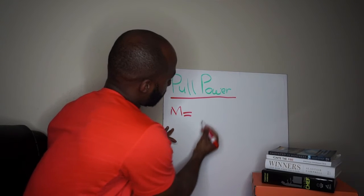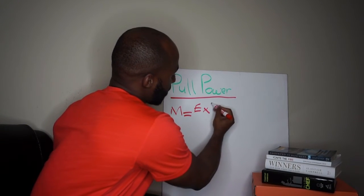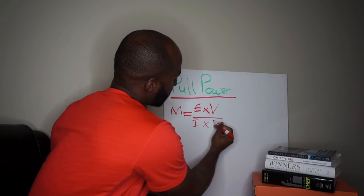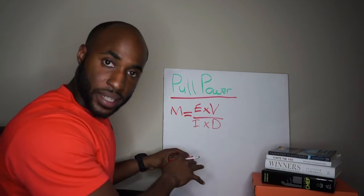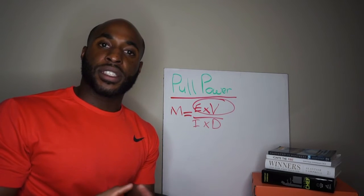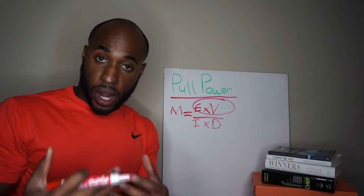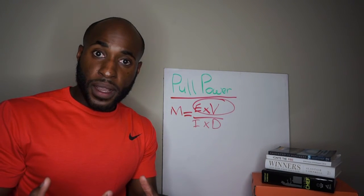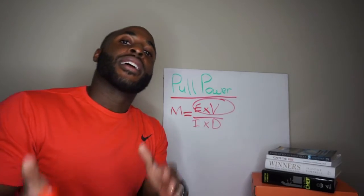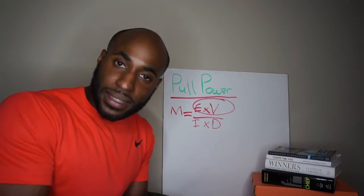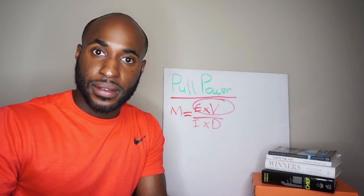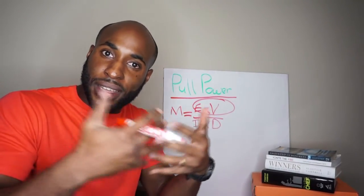Motivation equals expectancy times value over impulsivity times delay. But the most important part to this equation is actually the numerator here: expectancy times value. What that means is when you value a goal multiplied with the expectancy that you're going to achieve the goal, that's what creates more motivation. It's this combination of valuing something and expecting that you're going to achieve it.